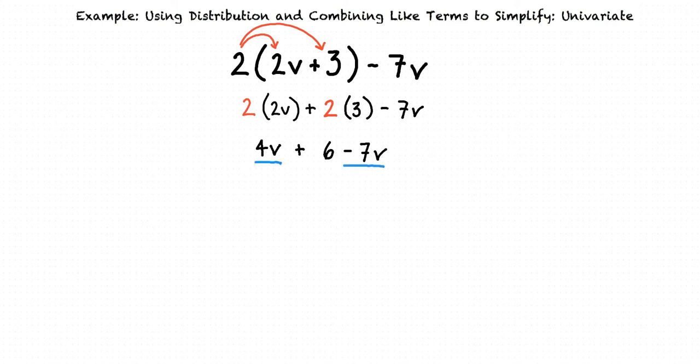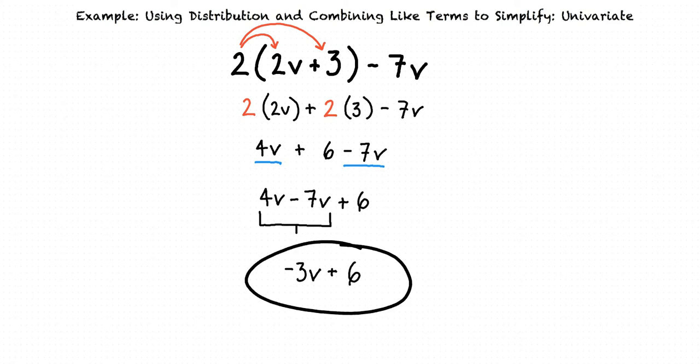We will next reorder the expression so the like terms are next to each other, resulting in 4v minus 7v plus 6. And since 4v minus 7v equals negative 3v, our final answer is negative 3v plus 6.